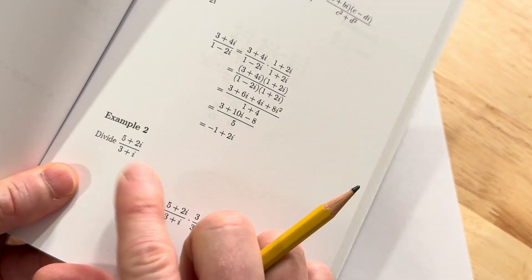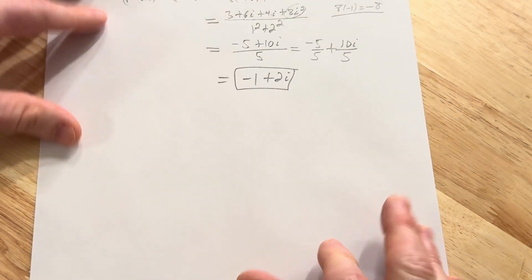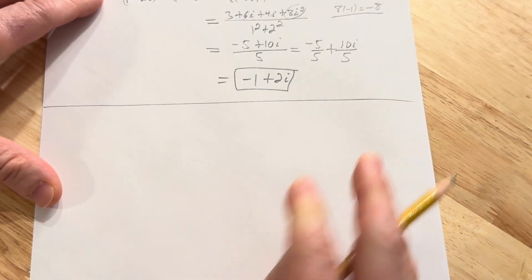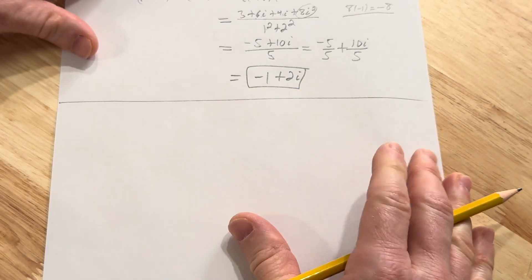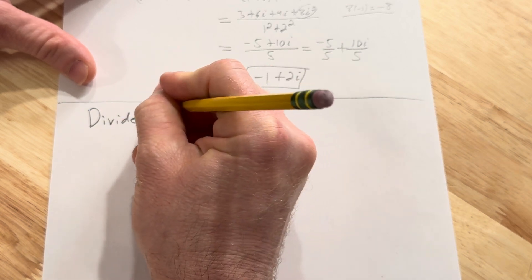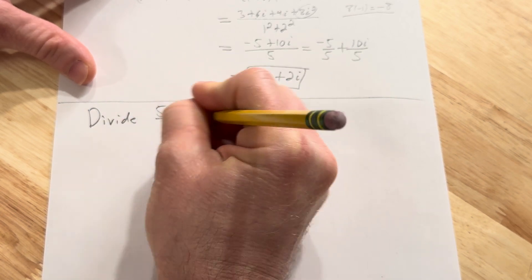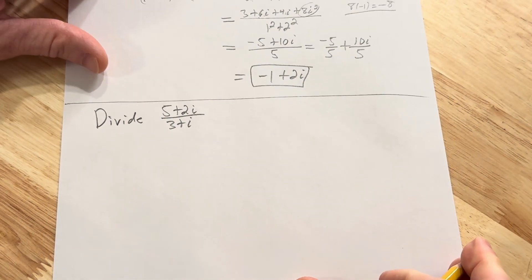Okay let's go ahead and do another example. Let's do example 2 from this book just to see how it works. And I think I can squeeze it in on the same piece of paper. I'm trying to save a tree here. So divide 5 plus 2i over 3 plus i.